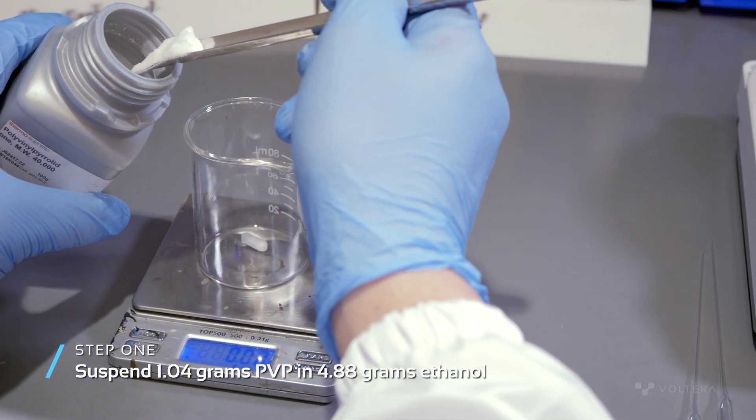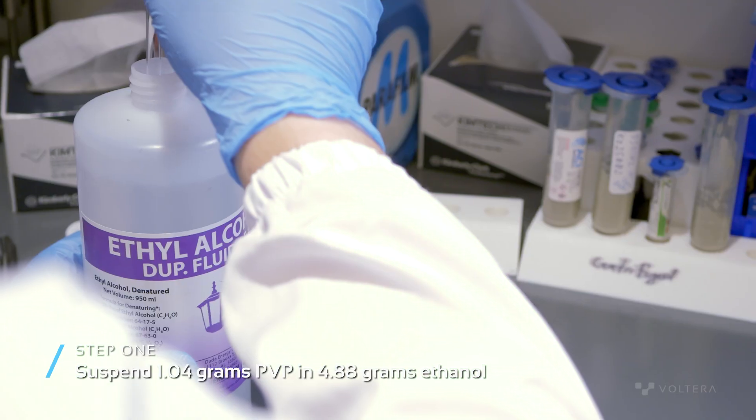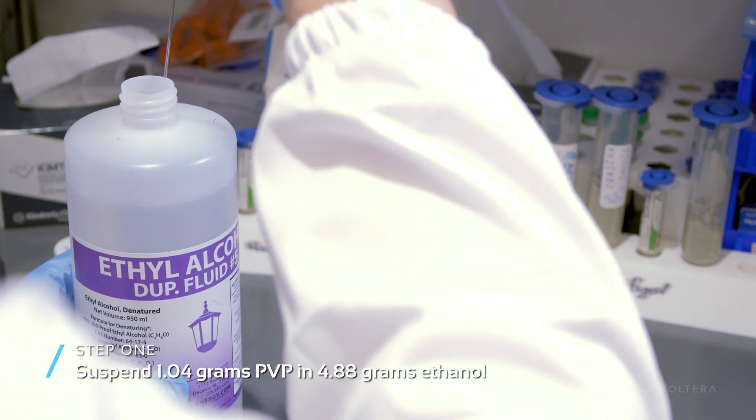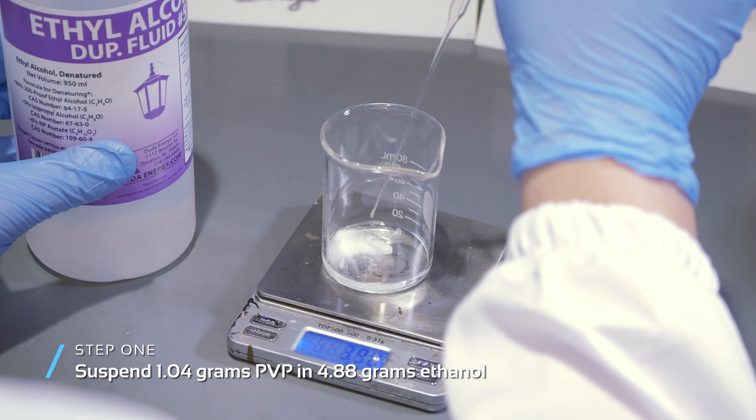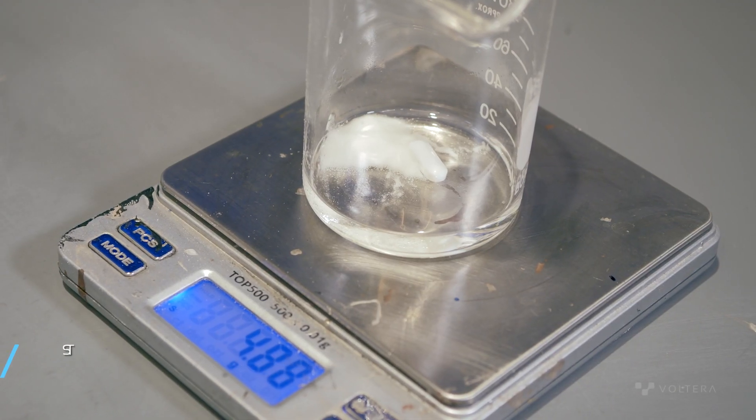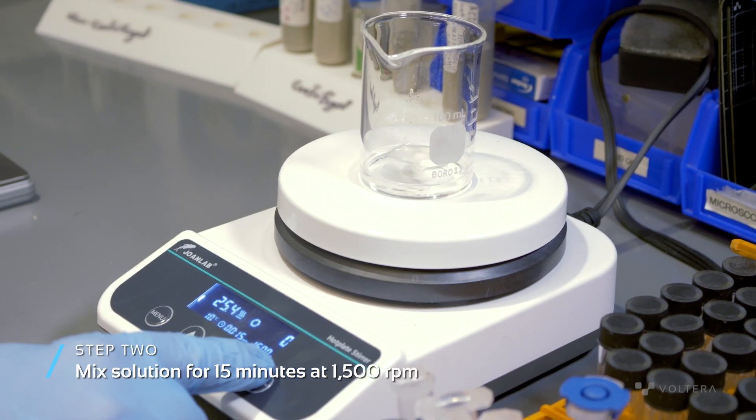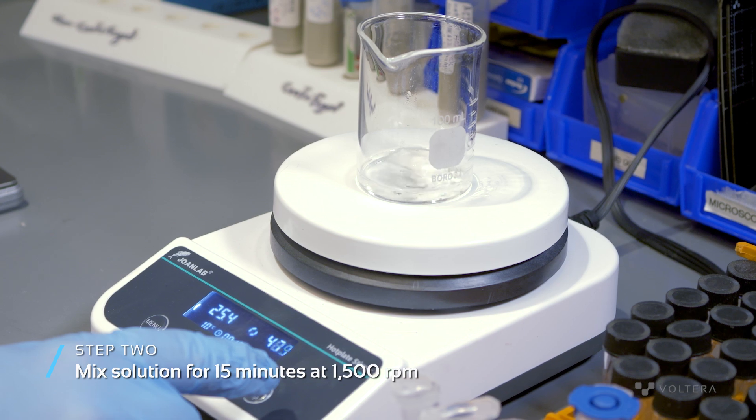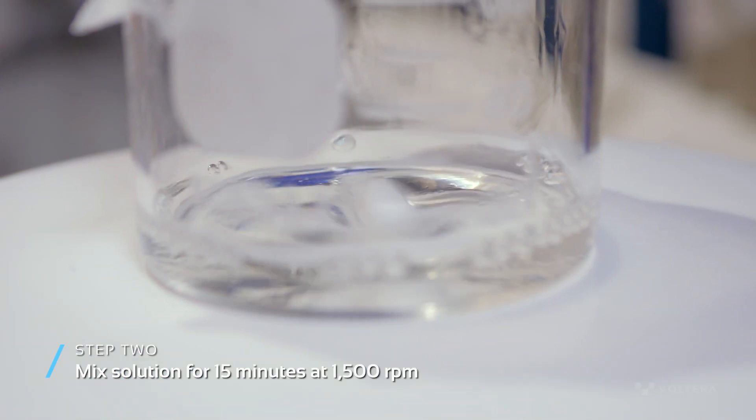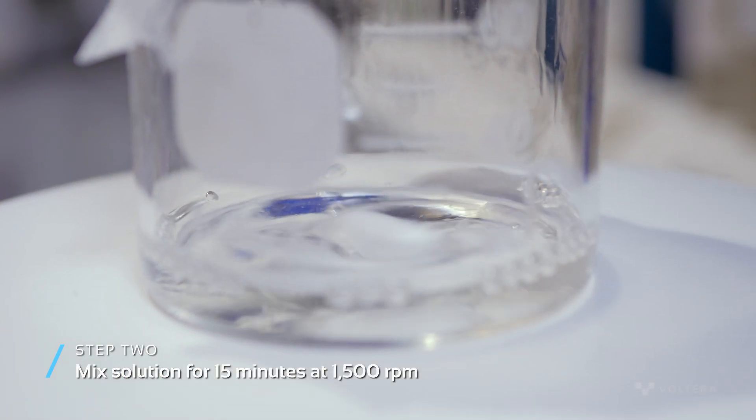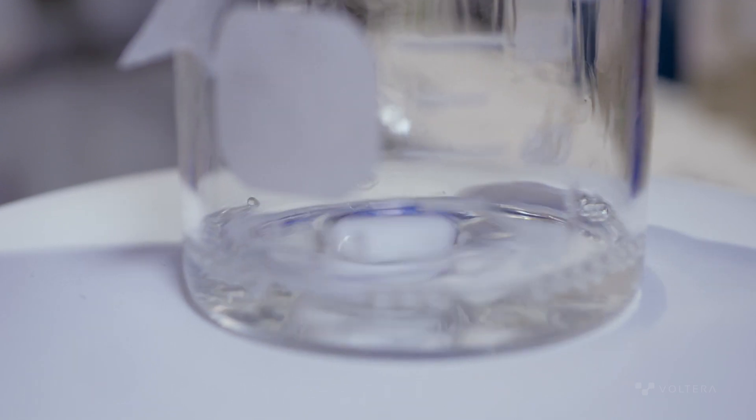First, suspend 1.04 grams PVP in 4.88 grams ethanol using a Pasteur pipette. Next, mix the PVP and ethanol solution on a magnetic stir plate uncovered for 15 minutes at 1500 RPM. Ensure all the PVP has dissolved into the alcohol before moving on.